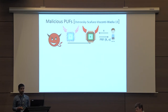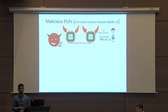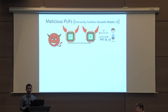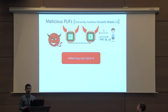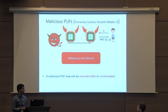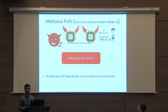Since the adversary has the secret key used in the PRF, he can create another PUF having the same PRF key, or just evaluate the PRF itself — so he can easily clone such a PUF. Therefore, a malicious PUF may be neither unpredictable nor unclonable to its creator. However, in this model, we still want an honestly generated PUF by any honest party to remain unpredictable and unclonable.